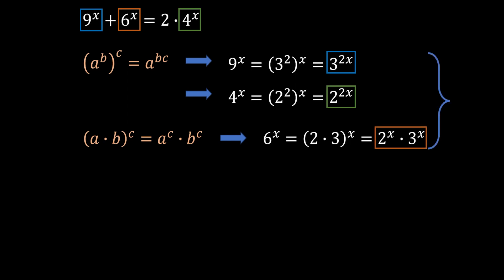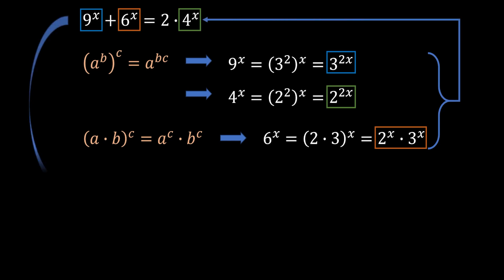Now we can substitute these three values into our original equation and we get that 3 to the power of 2x plus 2 to the power of x times 3 to the power of x is equal to 2 times 2 to the power of 2x.